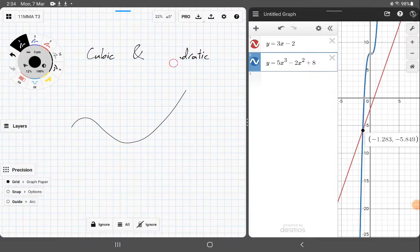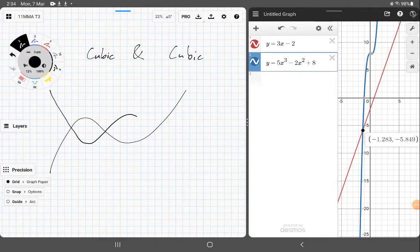What about a cubic and a cubic? Can we get any more solutions than that? So what if I put a descending one? So that's also going to give me three solutions.